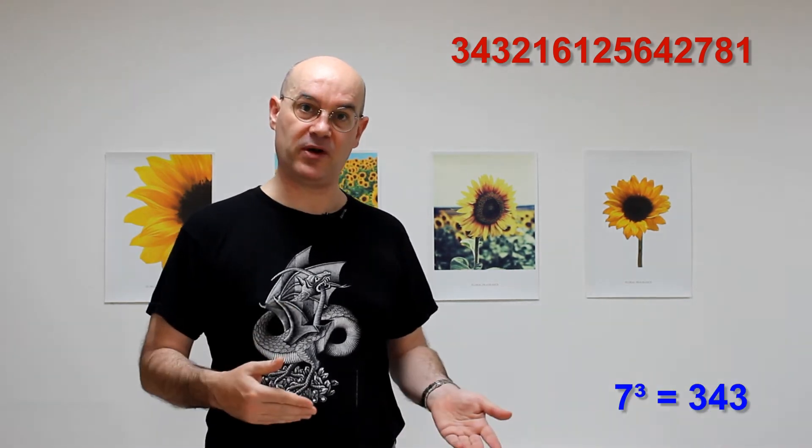And now, we add up 7 cubed, 343. And we get this. That looks prime. And it's not prime. It's a multiple of 68,639.